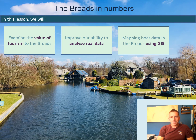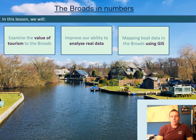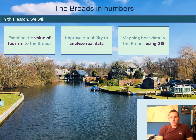We are going to have three different lesson objectives today. Firstly, we're going to be examining the value of tourism to the Broads. We've touched on this a couple of times previously - the Broads is a very popular place to visit. 7.5 million people visit the Broads every year, and therefore lots of businesses and jobs are based around this industry of tourism. Tourism is really important to this area.